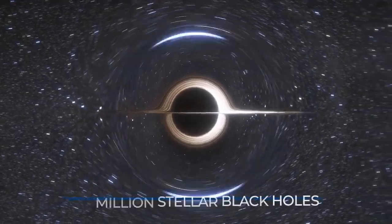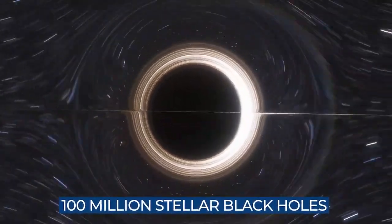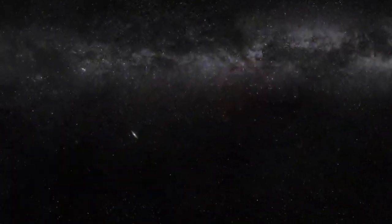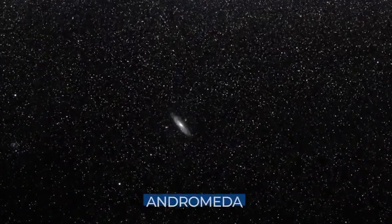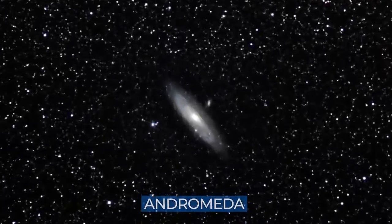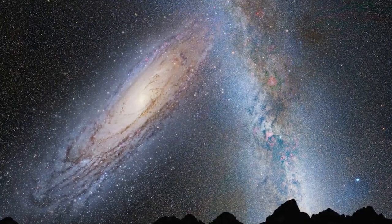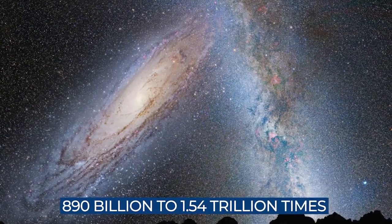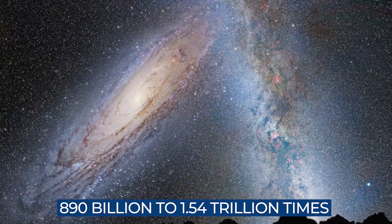And almost 100 million stellar black holes among the hundreds of billions of stars and planets. A disk of gas, known as Andromeda, fills the space between the stars. The Milky Way galaxy has a mass that ranges from 890 billion to 1.54 trillion times that of our Sun.